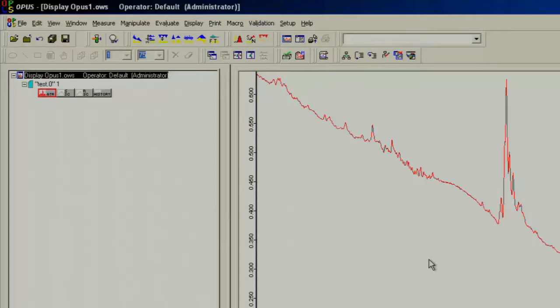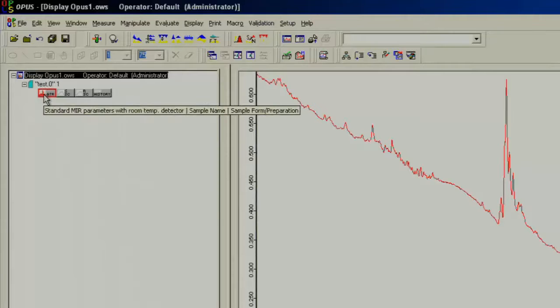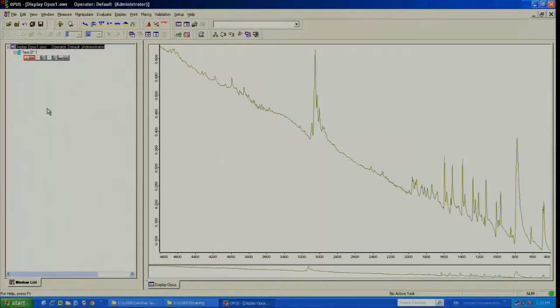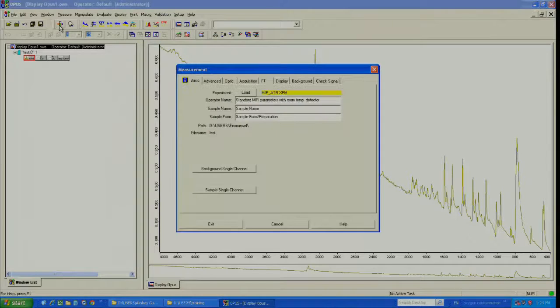You can change the color of the pattern by clicking the little box labeled ATR in the top left part of the screen. Now if you want to measure a second sample, go back to the test tube, and then you want to load your second sample.